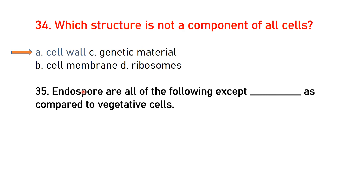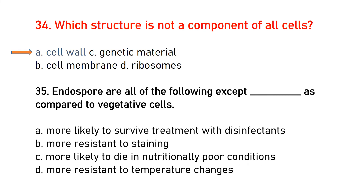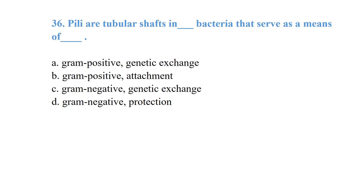Endospores are all of the following except: as compared to vegetative cells, they are more likely to die in nutritional poor conditions. In fact, endospores do not die in poor nutritional conditions — they exist as a dormant form.